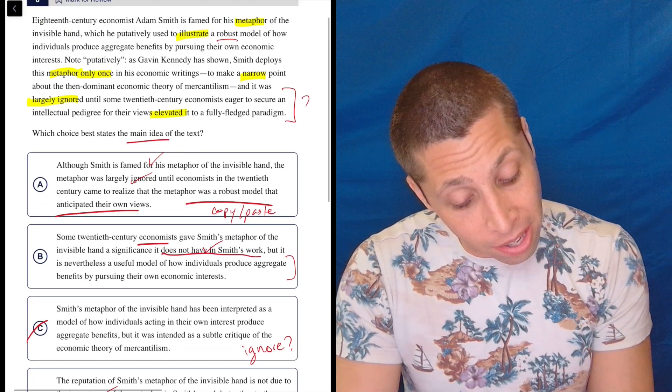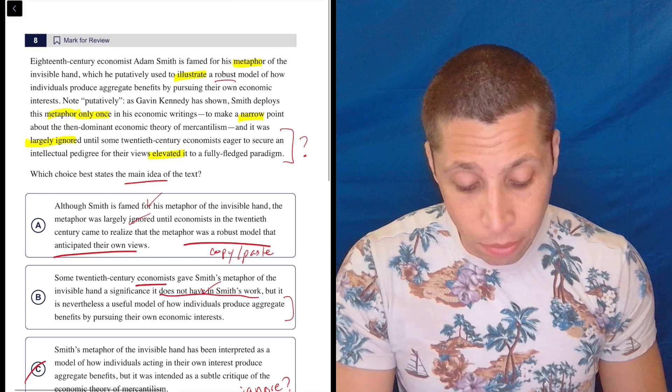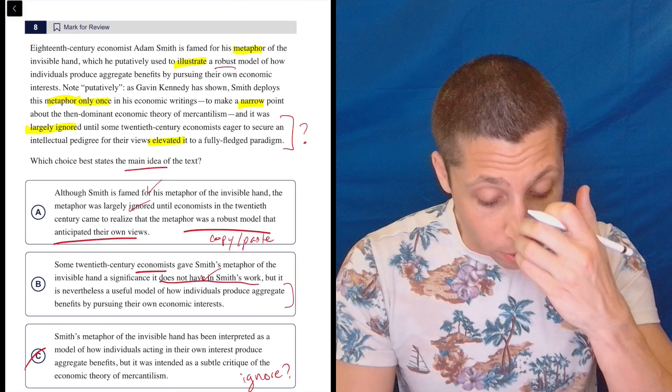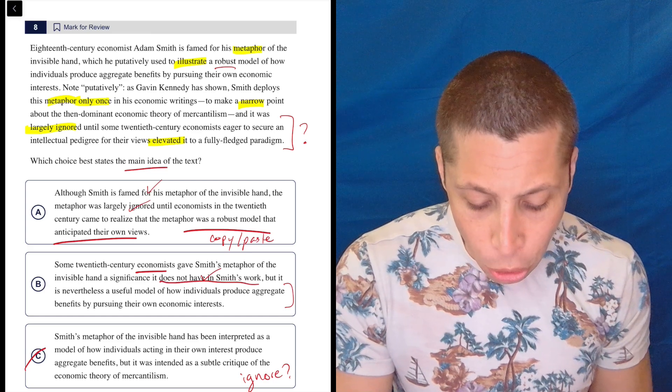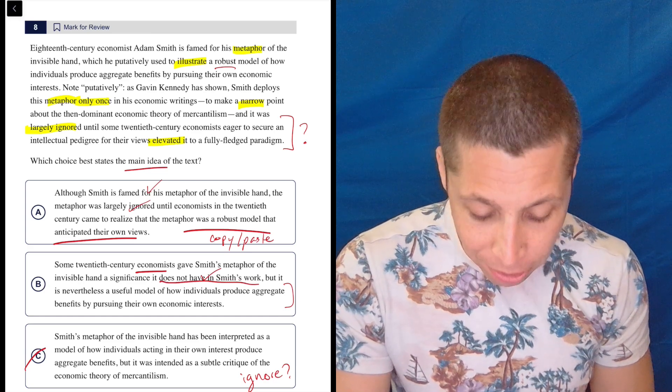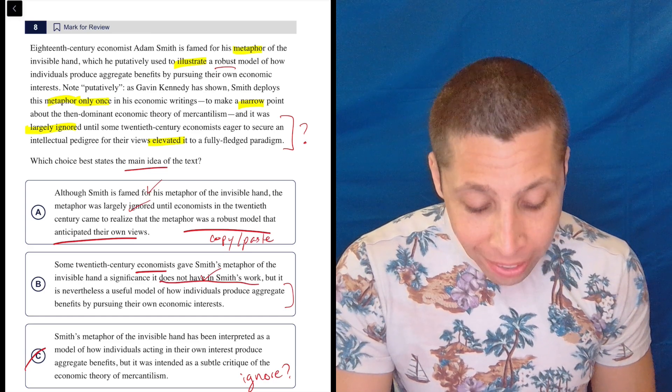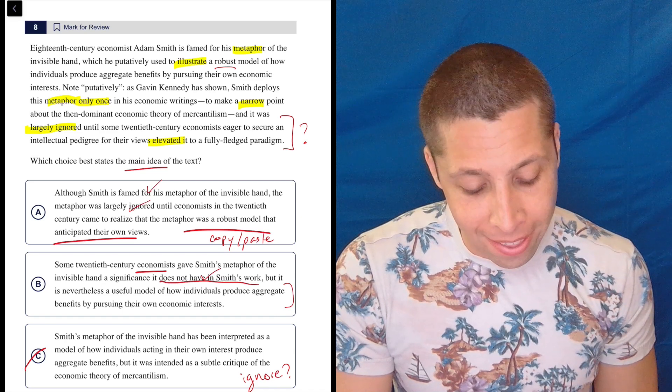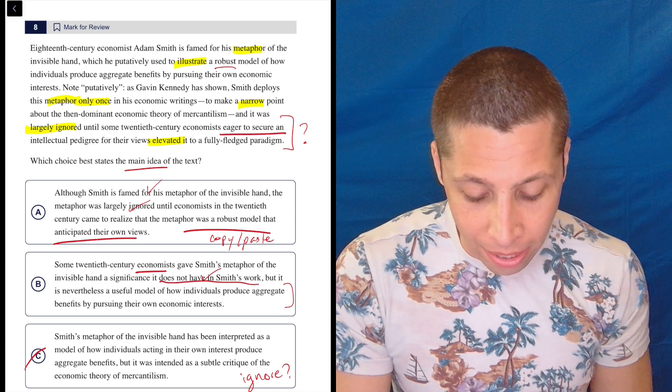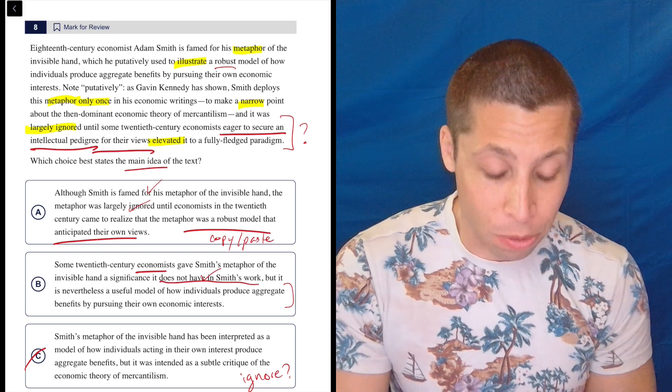The part of this passage I understood the least is right here. Let's see if we can make some more sense of it. So it was largely ignored until some 20th century economists eager to secure an intellectual pedigree for their views elevated it to a fully fledged paradigm. So they're eager to secure an intellectual pedigree for their own views.